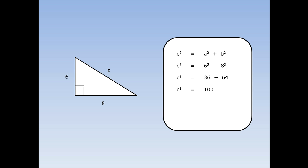So I've got c squared equals 100. I want to know what c is, so I square root both sides, and c is the square root of 100. The square root of 100 is equal to 10, so in this example, the hypotenuse equals 10.